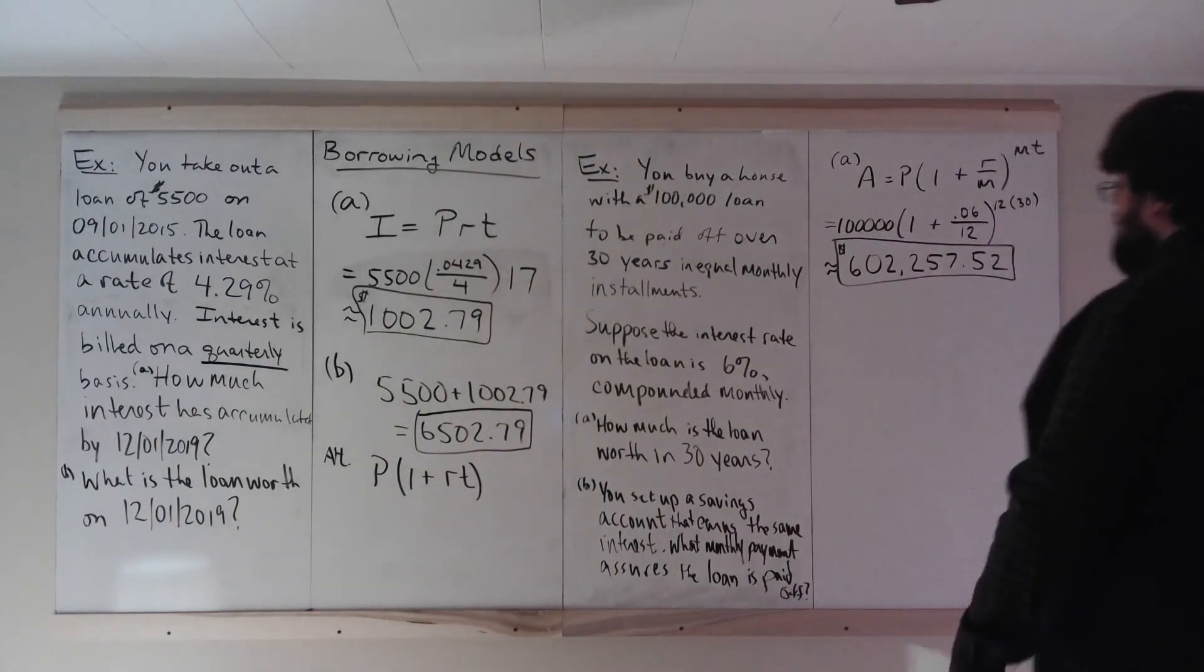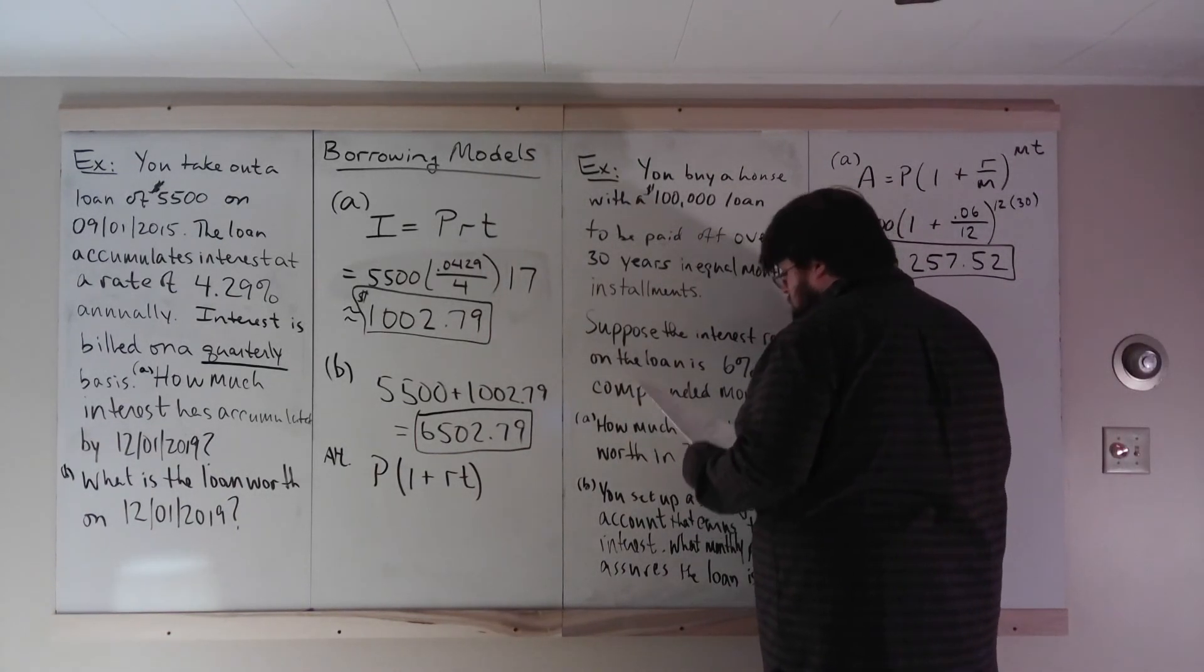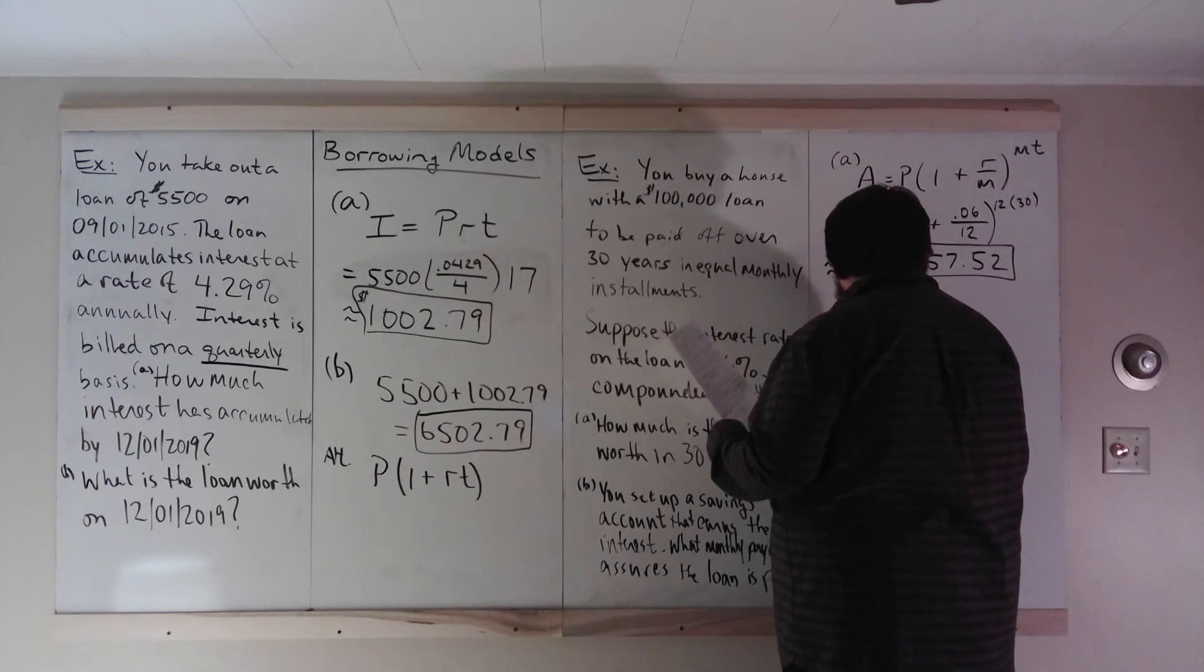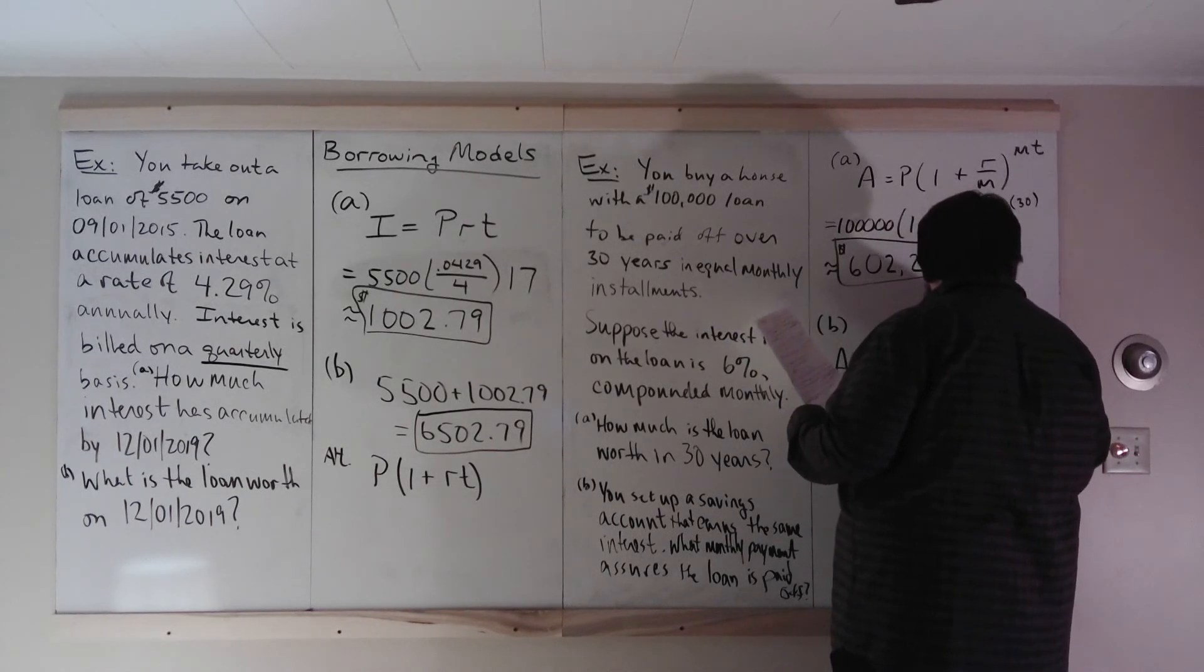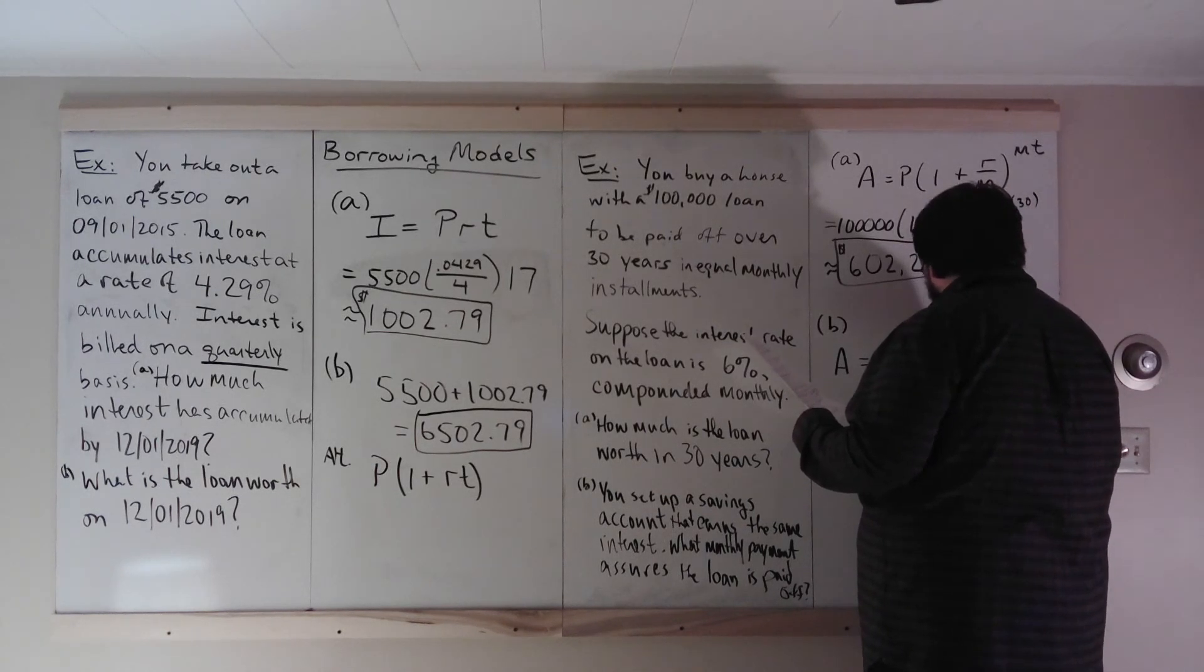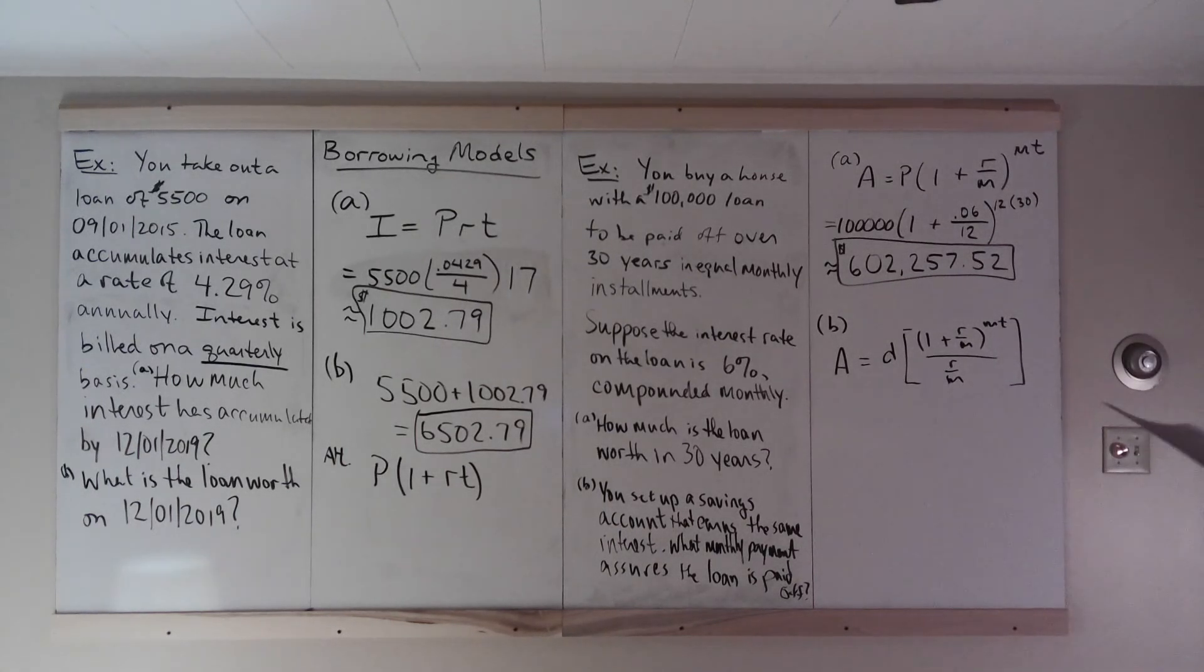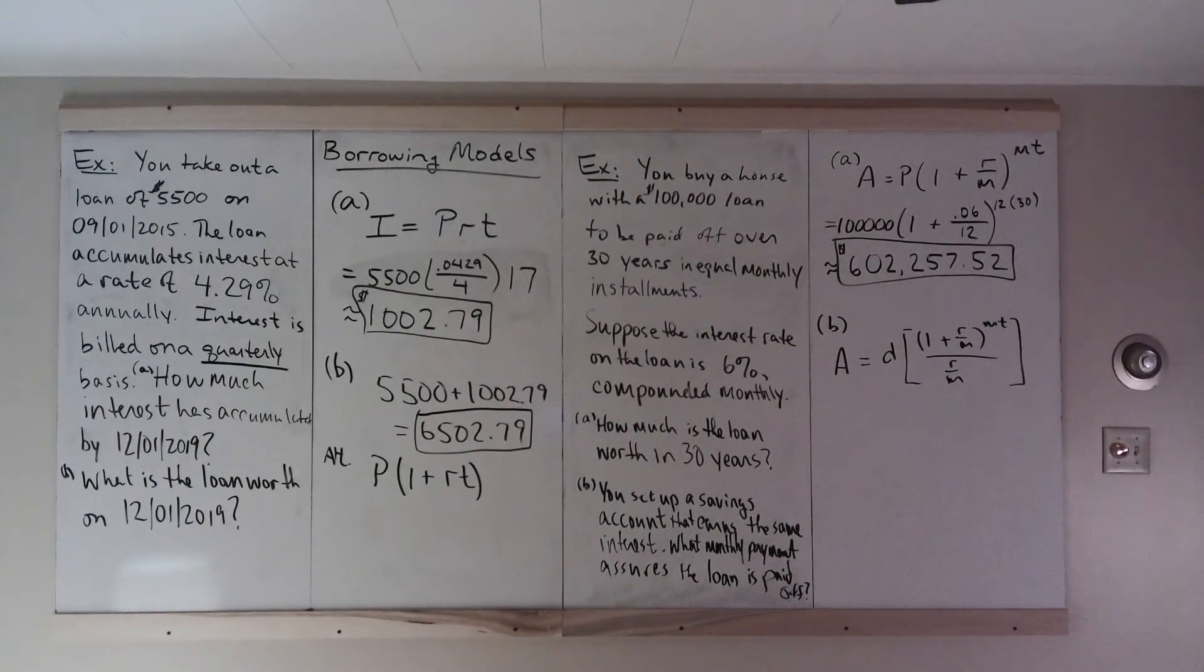So you set up an account that earns the same interest. What monthly payment assures the loan is paid off? Well, here we just use our monthly payment formula, which is, I didn't write what letter it was. I think it was A. It might have been P. It equals D times 1 plus R over M to the MT all over R over M. That was from last week's material, the monthly payment. Find a D that satisfies that. Now here, R, M, and T are given from the 30 years, 6% compounded monthly, 6% annual interest. What about A and D?